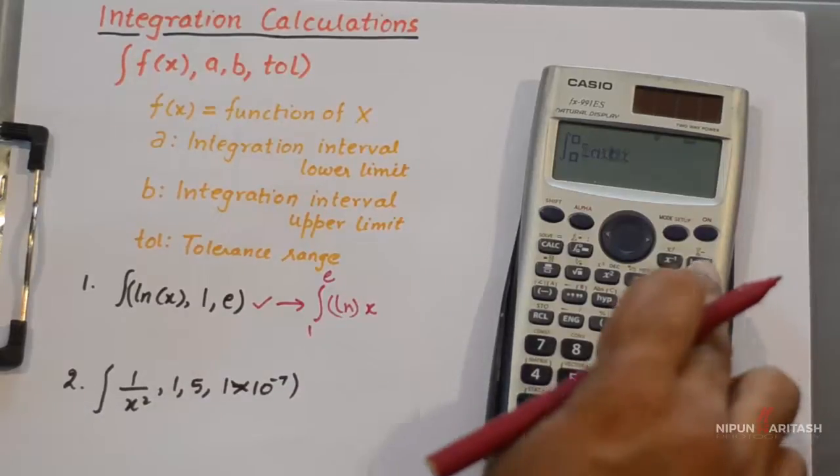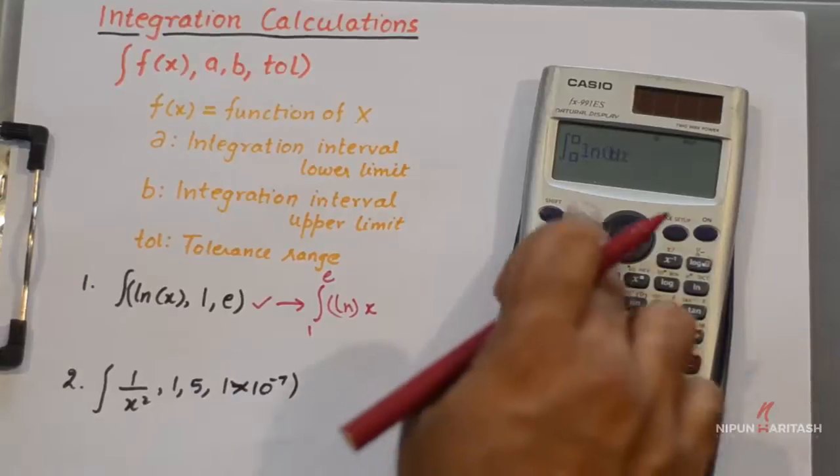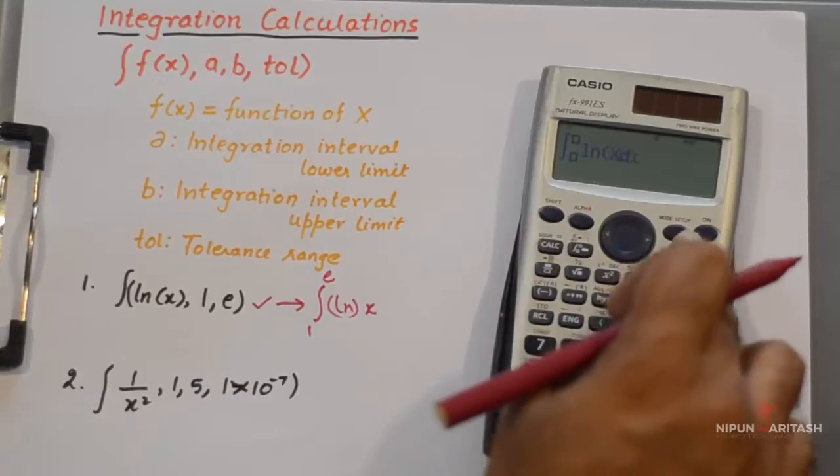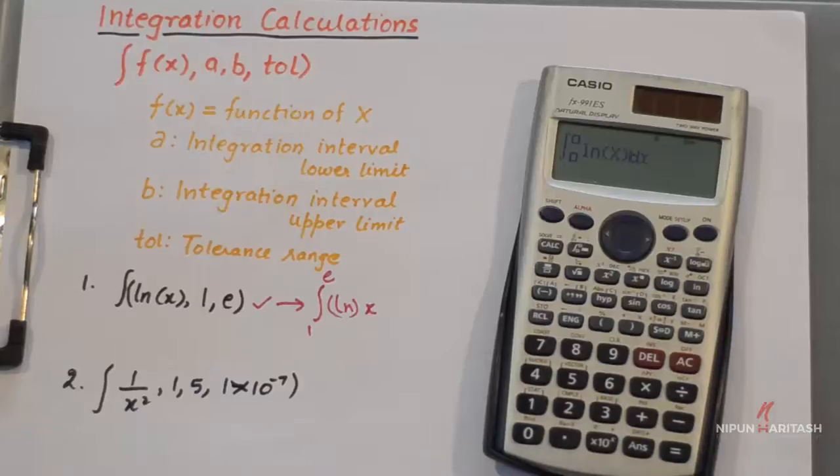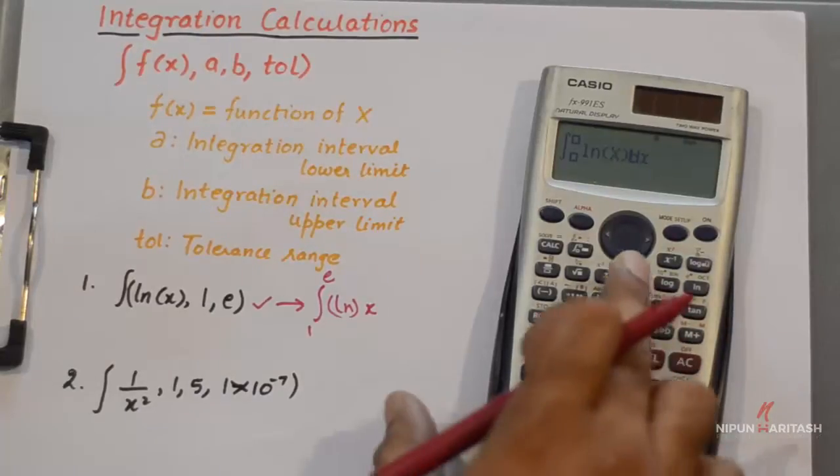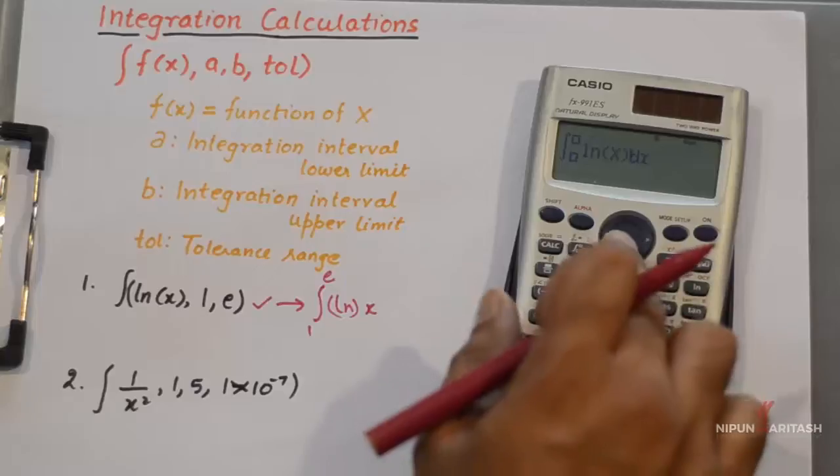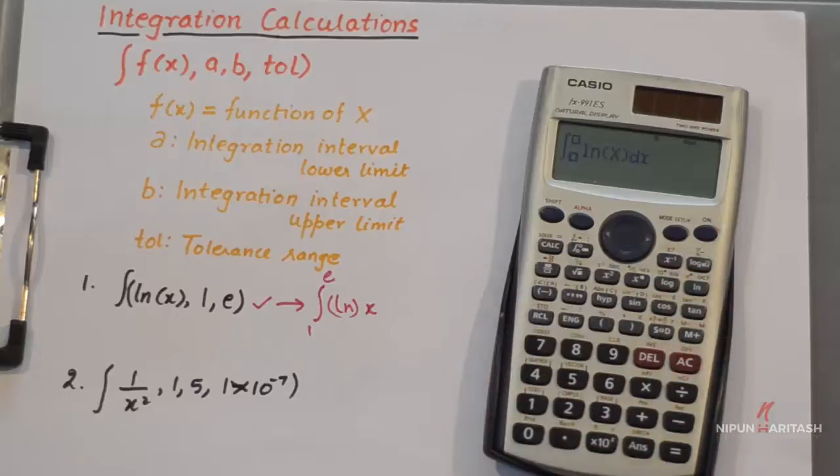We can simply enter the function, and then you can press the down arrow. It will prompt you to enter the lower limit.